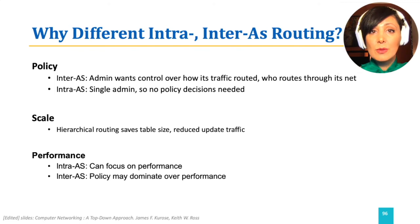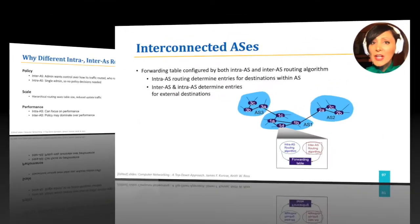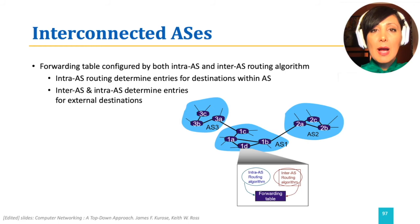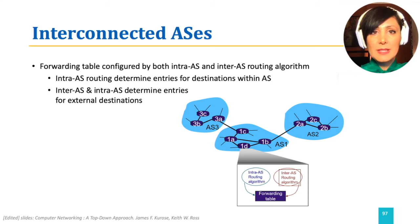Among ASs, though, policies for many reasons like ownership, pricing, security, and similar considerations play a more important role. The hierarchy introduced using ASs also changes the nature of forwarding compared to a flat network. The forwarding table in a router within a network of interconnected ASs is affected by both intra-AS and inter-AS routing algorithms. Intra-AS routing determines entries for destinations within the AS, and inter-AS and intra-AS together determine the entries for external destinations.